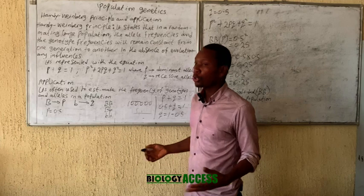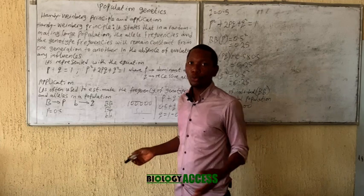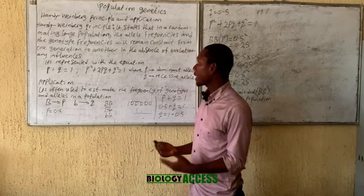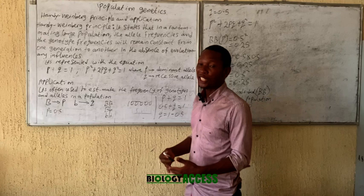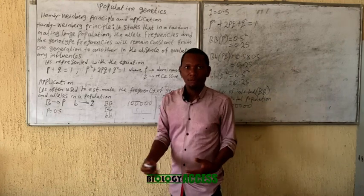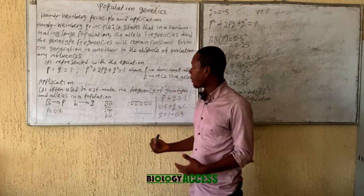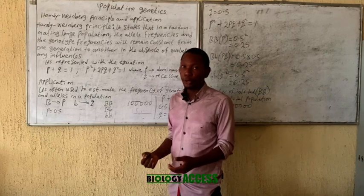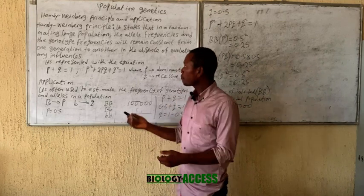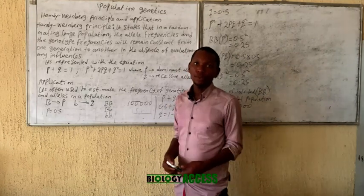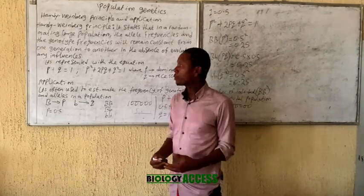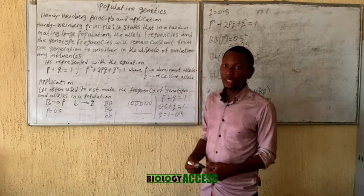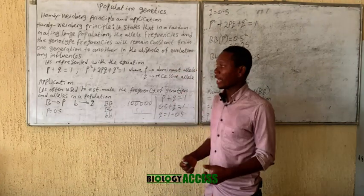There are so many evolutionary forces. We have mutation, gene flow, and many more. You can list about 10 of these and explain them in detail. If you want to participate in the challenge, request my email in the comment section and I will reply. I will send you my email, then you will send me the answers and I can make corrections.